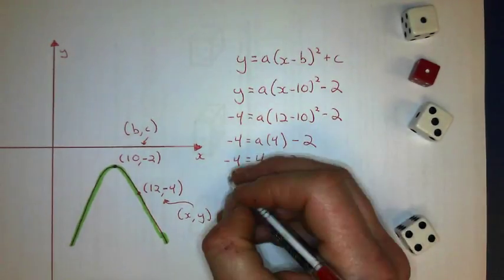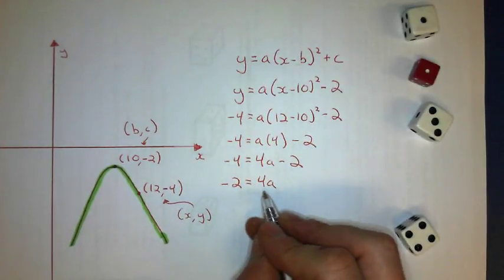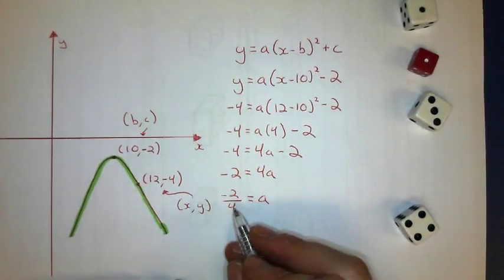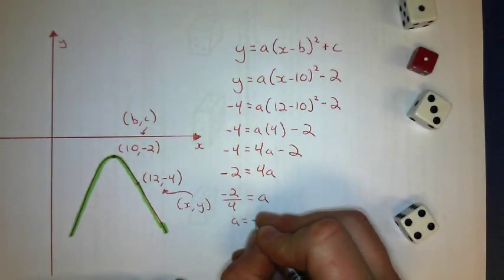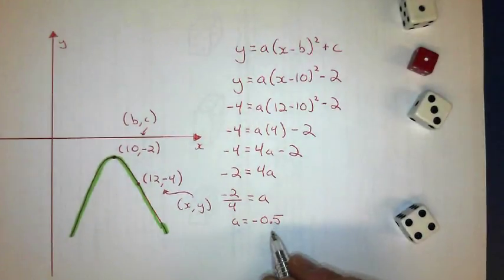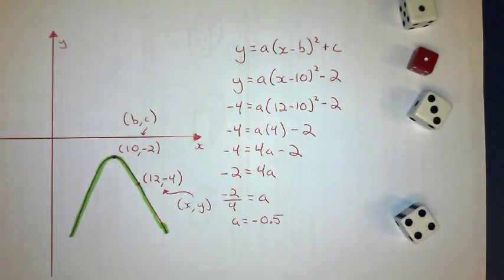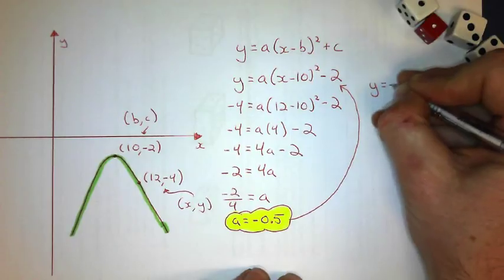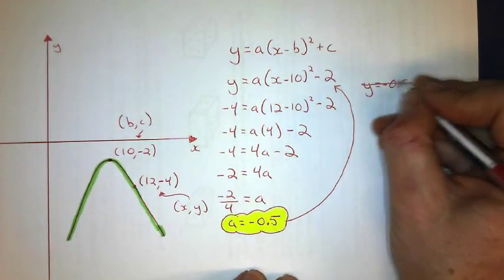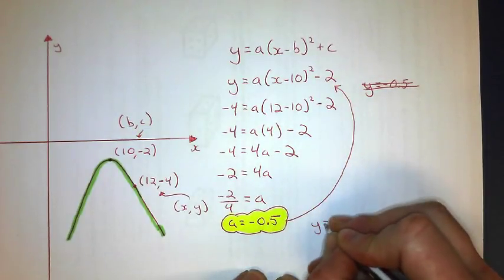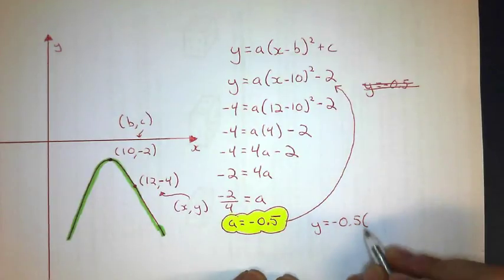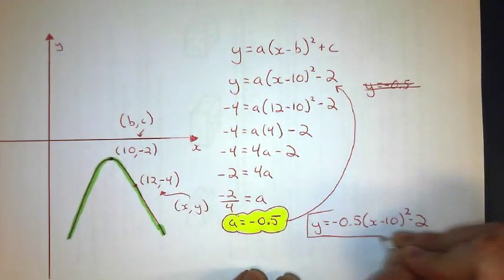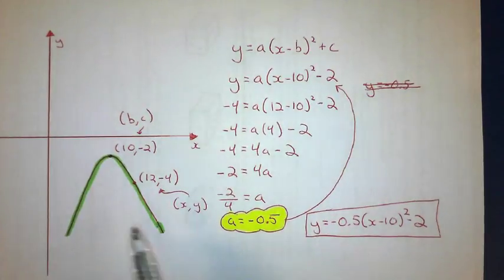To solve for a: adding 2 to both sides gives negative 2 equals 4a. Dividing by 4, I get negative 2 divided by 4 equals a, which simplifies to negative 0.5. If it's a terminating decimal, I'll write it as a decimal — that's fine. Substituting back into my equation: y equals negative 0.5 times x minus 10, squared, minus 2. And that's my equation for that curve.